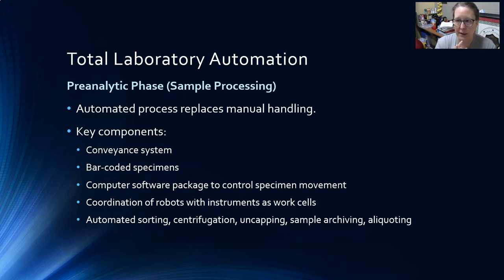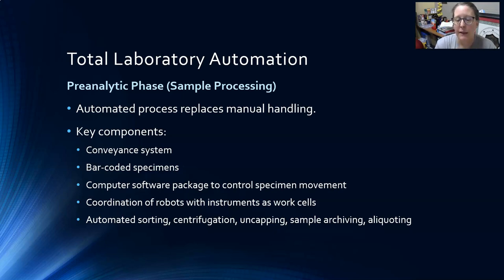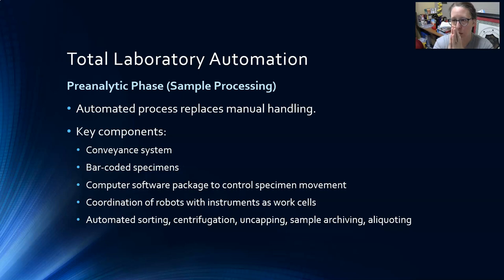Everything that needs centrifugation goes to centrifugation automatically. If it needs to be uncapped to be loaded on the analyzer, the machine uncaps it — not a lab tech. If a specimen needs to be split between two analyzers, the system can pull off part of the specimen into another tube, which is automatically barcoded and tracked. So one specimen becomes two specimens going in different directions.